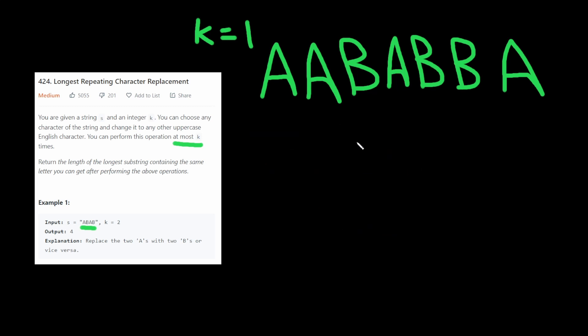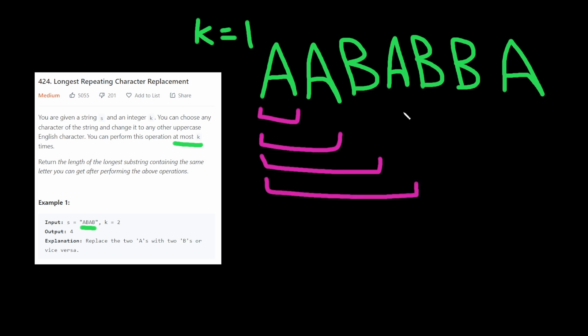For string problems like this, where we want a substring, generally the idea is to use something called a sliding window. In this case, we can see A is valid, then AA is valid because it's all just A. AAB is valid because we replace this B with an A and it's still valid. Then we get to the next B, and it's no longer valid because we have two Bs and three As, and we can only replace one character. So we have to keep removing elements from the substring until we get a valid substring.